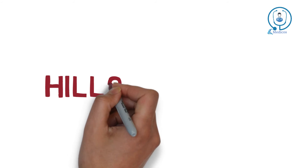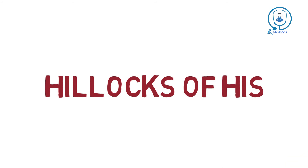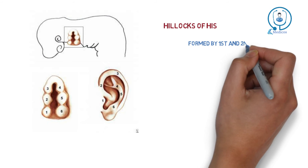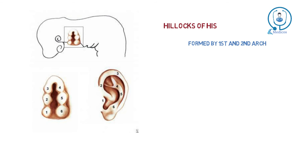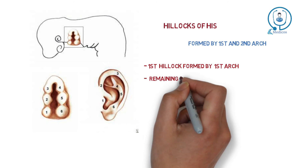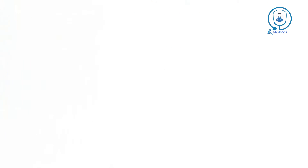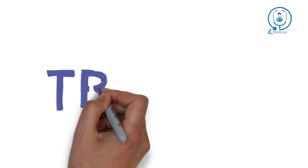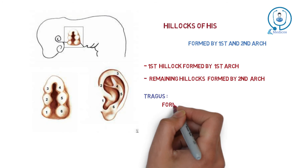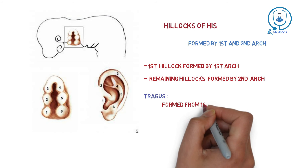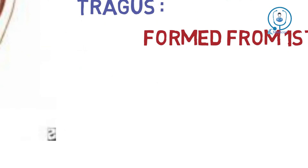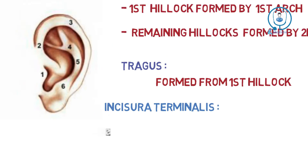Around the external auditory canal, the first and second arch form the hillocks of His. The hillocks of His are formed by the first and second arch. The first hillock is formed by the first arch, and the remaining hillocks are formed by the second arch. All these hillocks fuse and form the pinna. The tragus is formed by the first hillock. The fissura terminalis is the line of separation between the first and second hillocks.